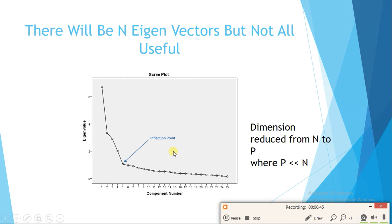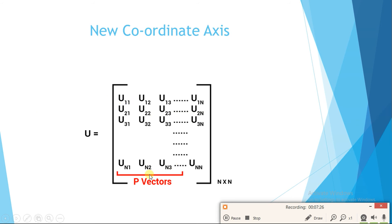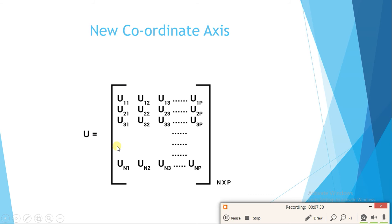We only choose the first p eigenvectors, where p is much less than n, so the dimension reduces from n to p. To find the value of p, we compute the sum s of all eigenvalues, which represents all information in the image matrix. We set a threshold of 0.9×s to conserve 90% of the original information, and keep adding eigenvalues until the running sum reaches that threshold — the count at that point is our p.